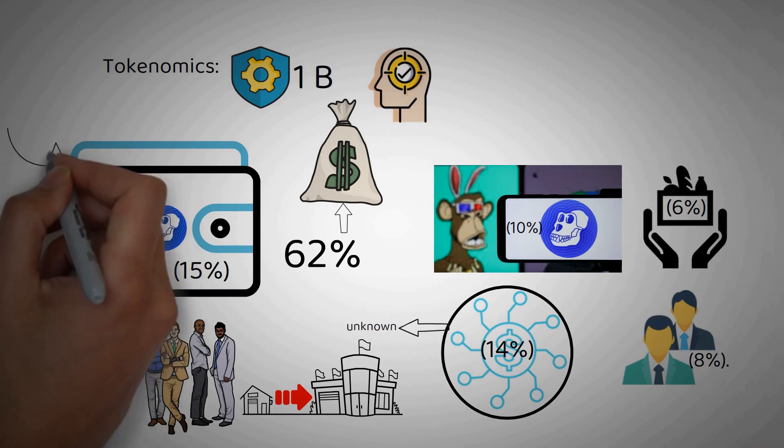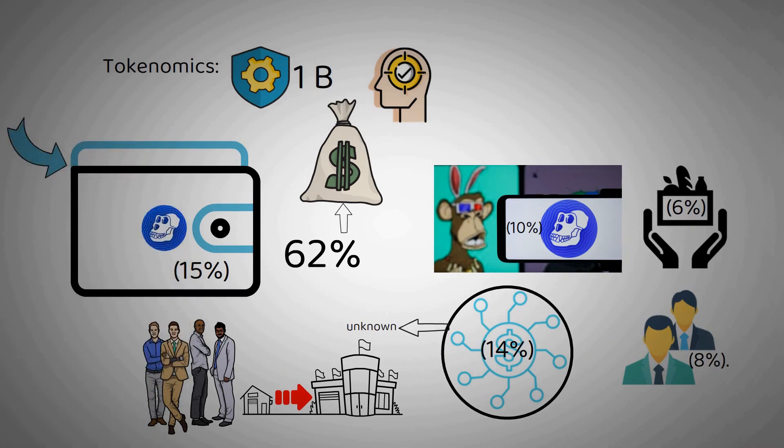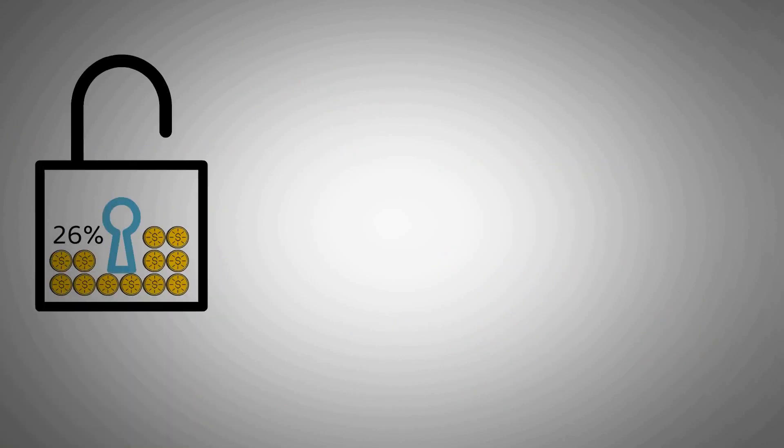Of the 15% of tokens distributed to BAYC or MAYC holders, holders who also have BAKC or Bored Ape Kennel Club NFTs will receive a bonus. Holders will have 90 days to receive their tokens. All unclaimed tokens will be donated to the ecosystem fund. Approximately 26% of the total token supply is unlocked immediately.